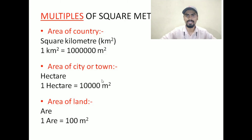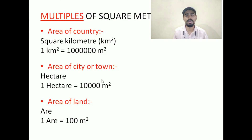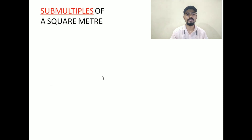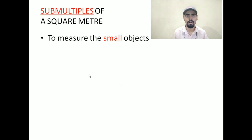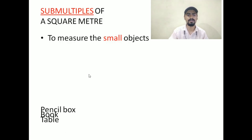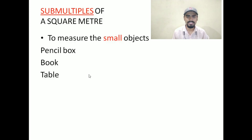That is why the use of multiples is there. We cannot use meter and centimeter everywhere when we are dealing with bigger objects such as land, city, or country — for that we cannot go for meter or centimeter. We have to deal with the multiples of them, meaning higher units, bigger units. Next is the sub-multiples of a square meter. Sub-multiples means when we are dealing with smaller objects — not like land, country, or city — when we are dealing with small objects just like a pencil box, book, or table. In this case, we are going to deal with the sub-multiples of square, just like decimeter, millimeter, centimeter.